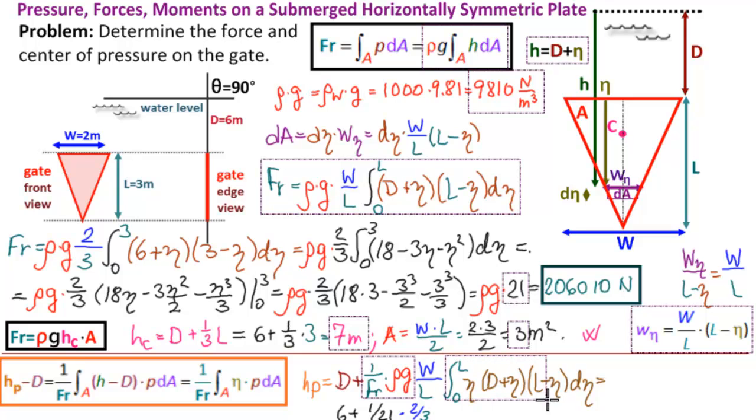Now this integral is a straightforward integral. You get the same numbers here, but an extra eta everywhere. So when you integrate, you get eta squared over 2, eta cubed over 3, eta to the 4th over 4, from 0 to 3. And you should get a value of 33.75. So this is equal to 6 plus 1.07, or 7.07 meters.